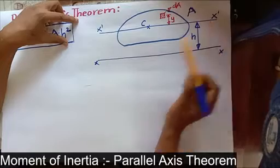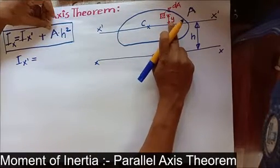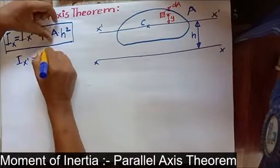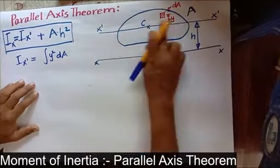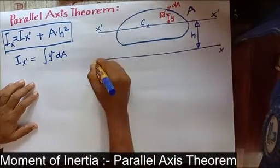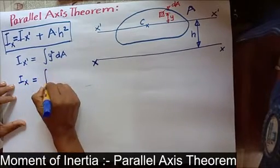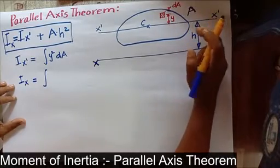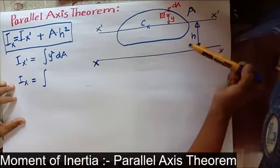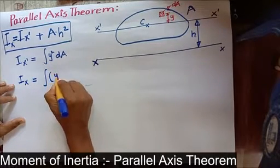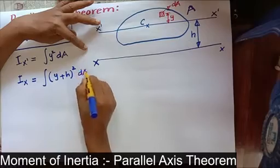The moment of inertia of the area with respect to the centroidal axis is I-x-dash equals integral of y² dA. This is the definition of moment of inertia. Now with respect to the x-axis, Ix equals the integral where the distance from the x-axis to dA is the sum of y and h, so instead of y we write (y + h)² dA.